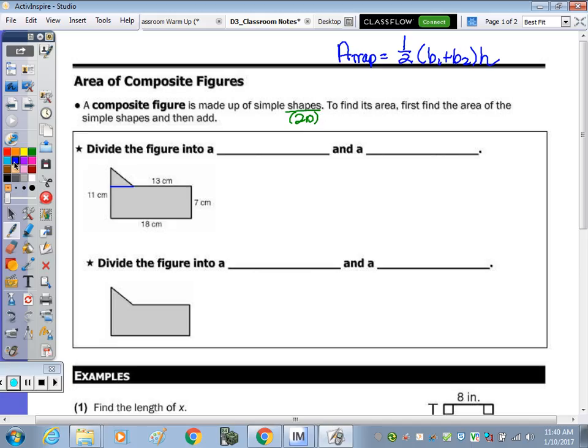In the first question you could divide this figure into a triangle and a rectangle, or you could draw the line straight down and break it up into a trapezoid and a rectangle. No matter which method you use, you're going to get the same answer.